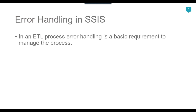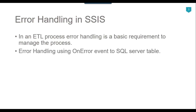In an ETL process, error handling is a basic requirement to manage the process. For example, if you create a SSIS package and execute it from Visual Studio and it fails, then you can easily know the error and how to fix it. But if you have deployed the SSIS package to a production server, then you don't have control — there should be a mechanism to log the errors to some destination, either a SQL server table or a flat file. It's easy to manage errors if they are stored in a SQL server table. In this tutorial, I will show you how to handle errors using the onError event and log them to a SQL server table.